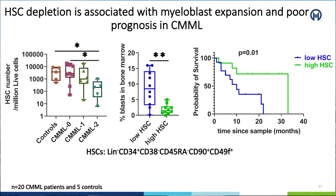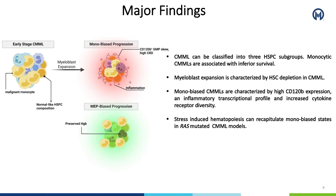This prompted a comprehensive investigation of the neoplastic monocytic subsets. Our major findings revealed that monocytic CMMLs can be identified by high CD120B expression, a GMP skew, an inflammatory transcriptional profile, and increased cytokine receptor diversity associated with poor prognosis.